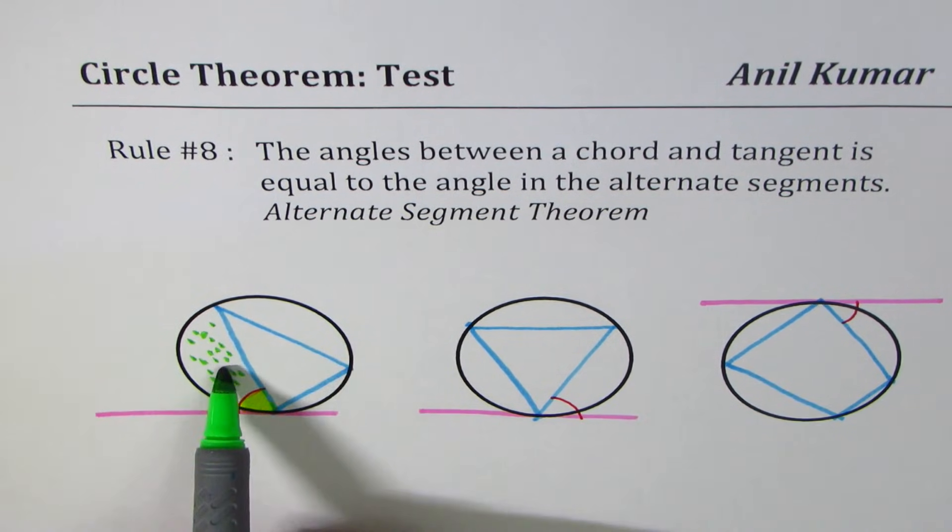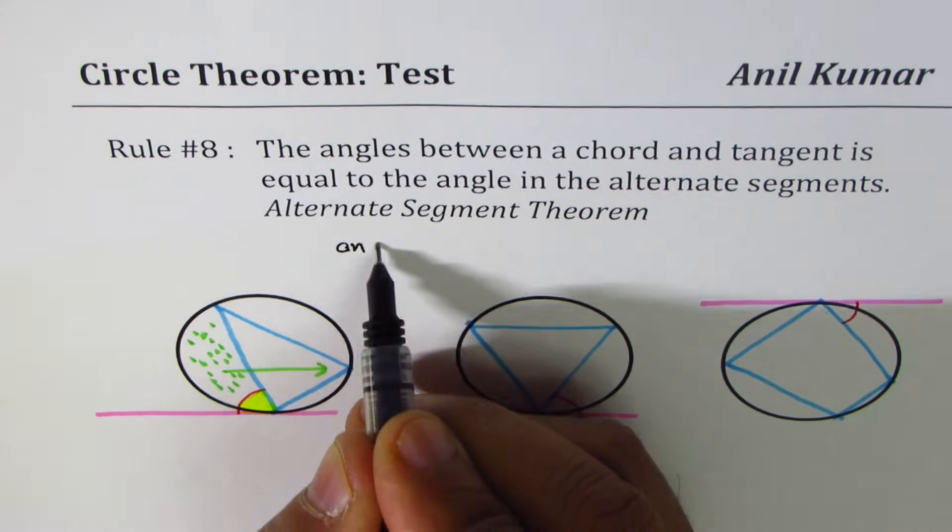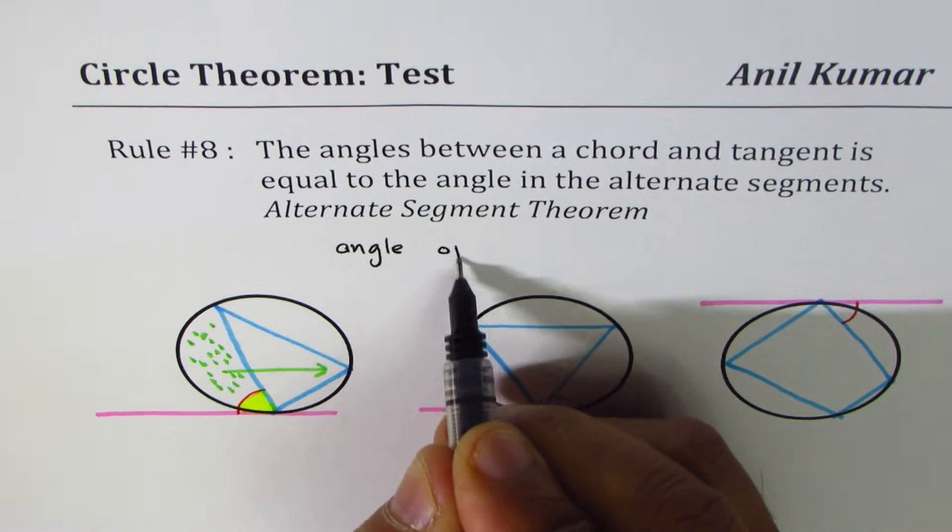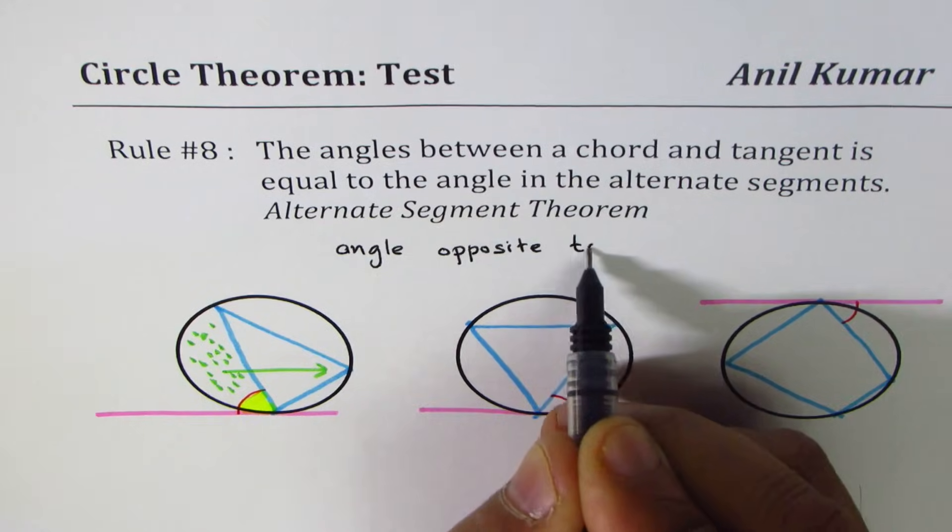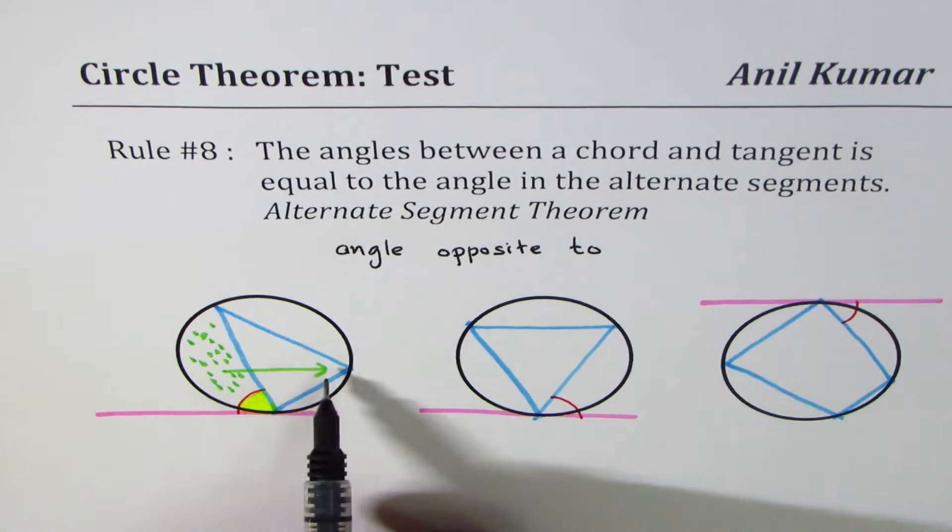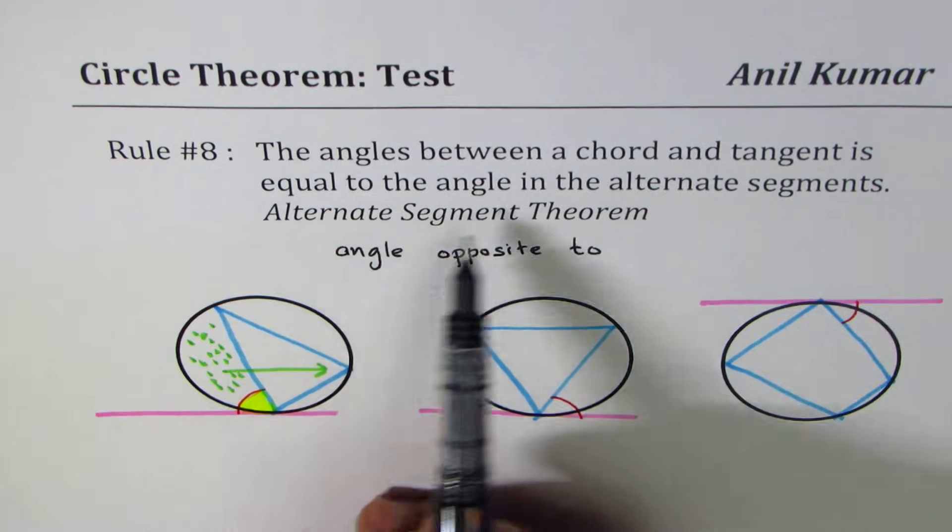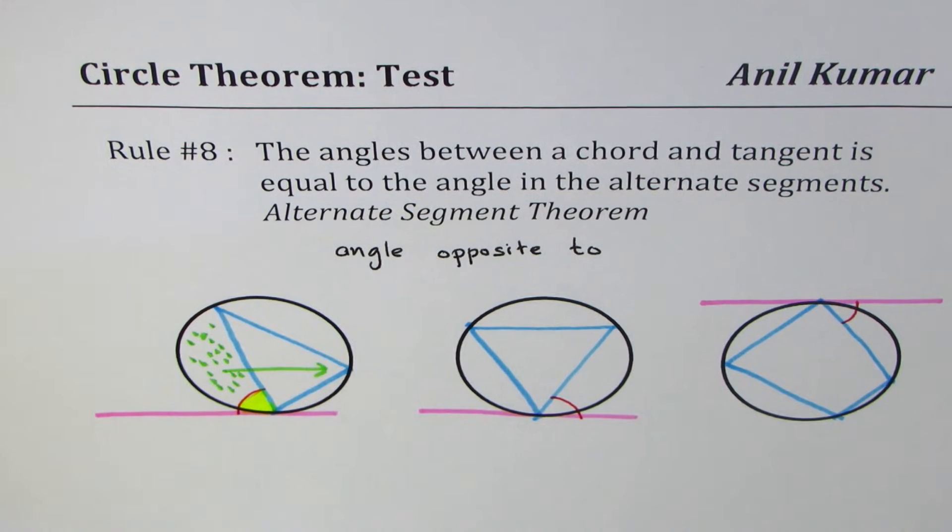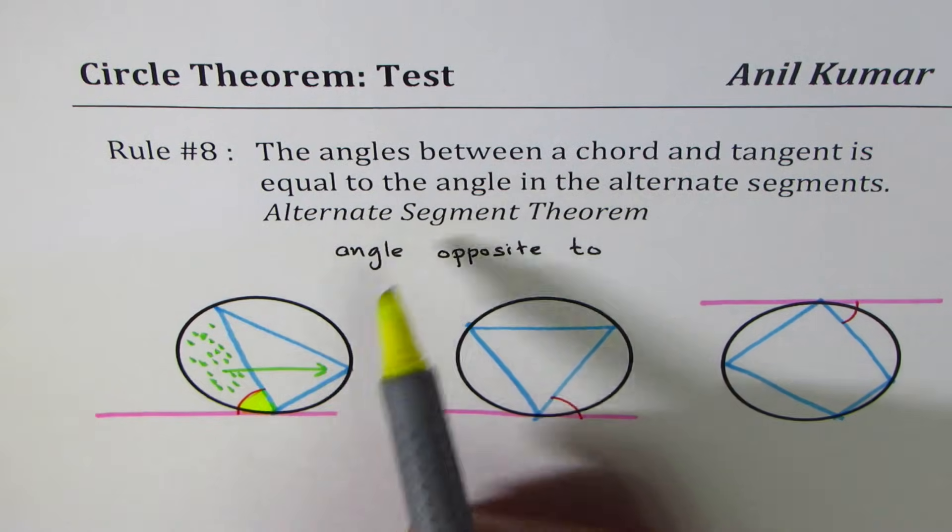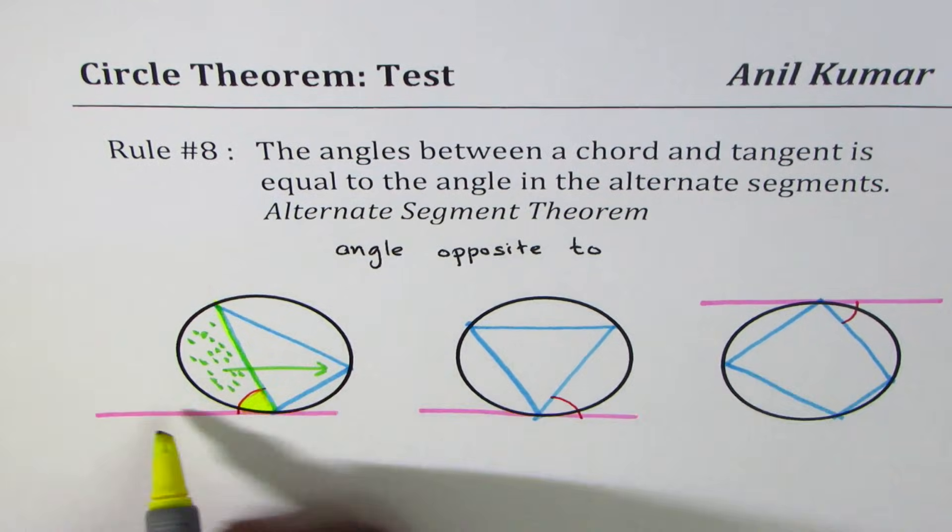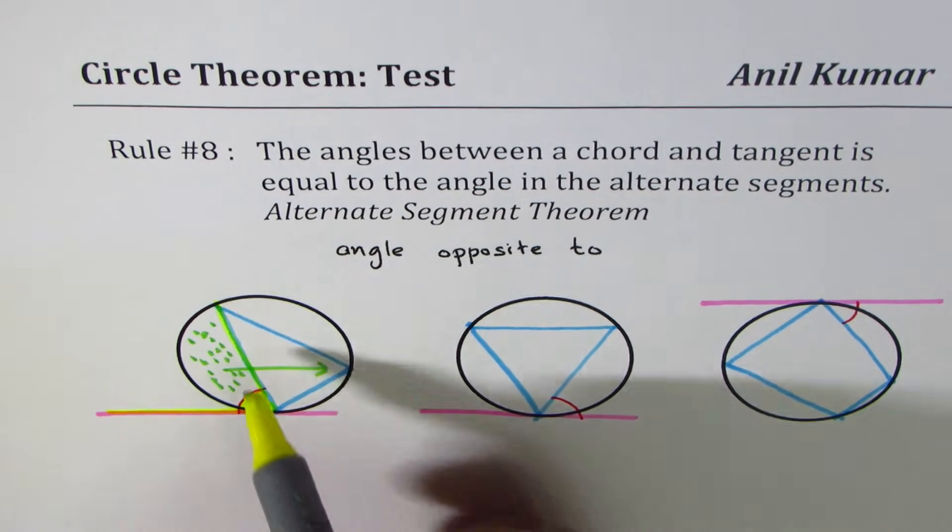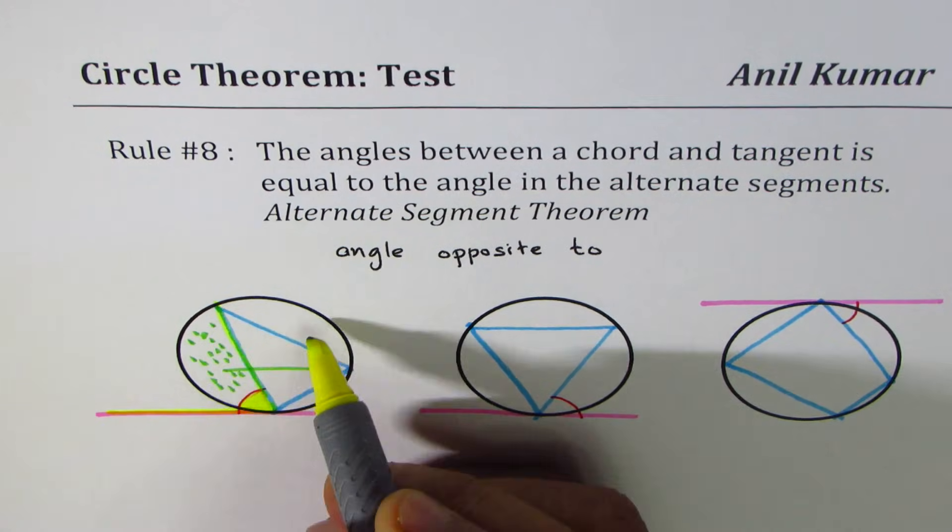At times when we write, we say angle opposite to, which is an easy way to identify the alternate segment. Alternate segment really means we are talking about the segment formed by the chord and the tangent. Now the alternate segment will be the other segment.